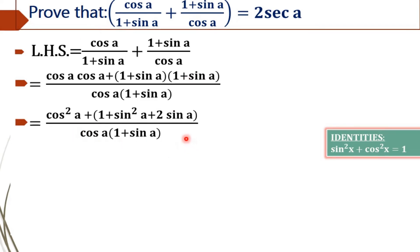We are not going to touch the denominator until we get our RHS. Why? Because 1 divided by cos A will give sec A, so we have to retain 1 by cos A until we get our result, that is 2 sec A.